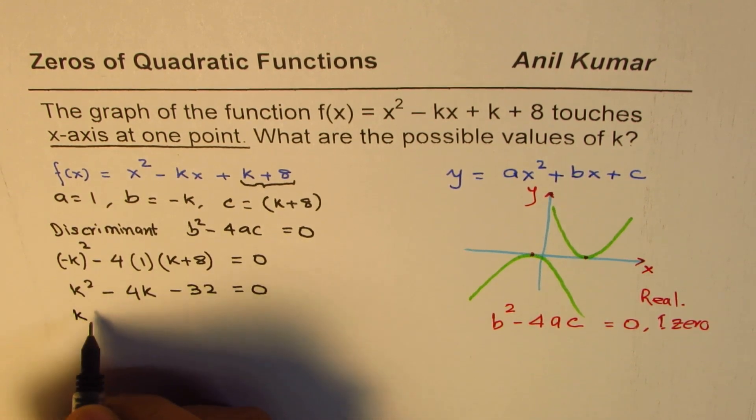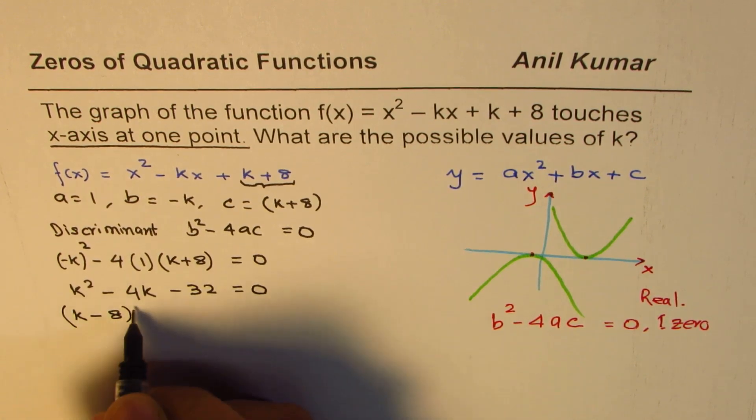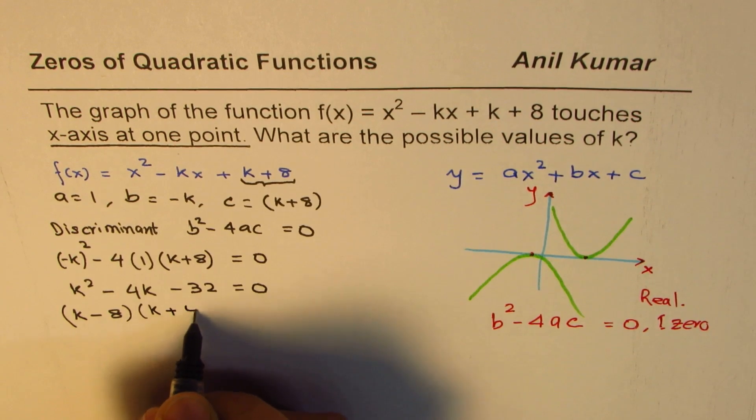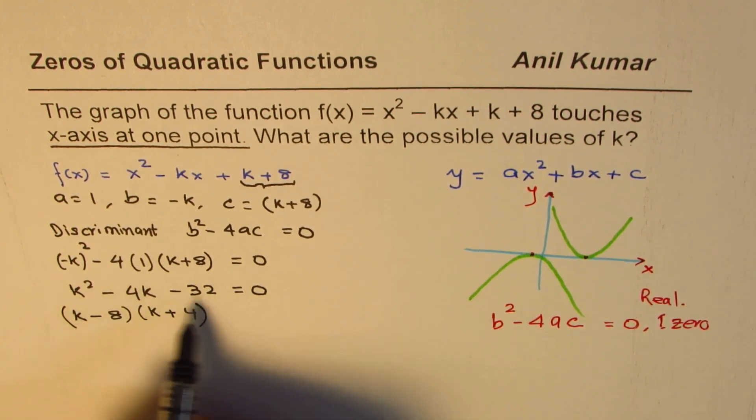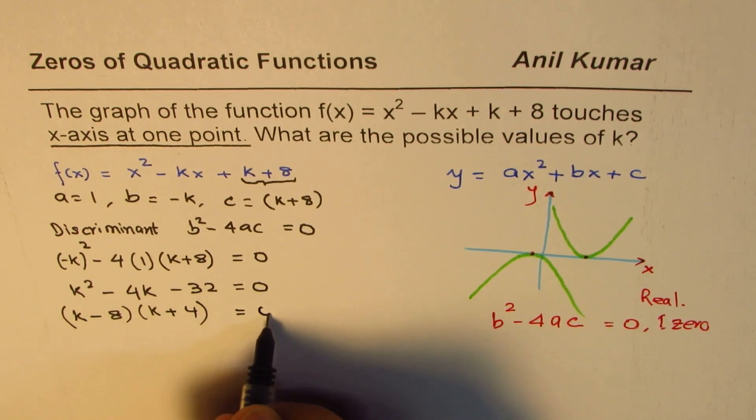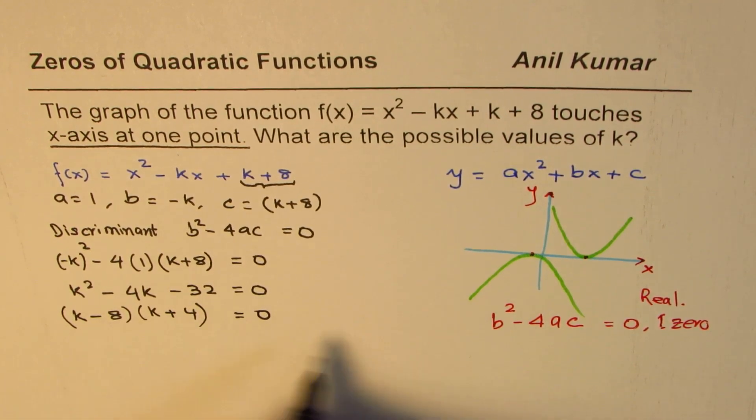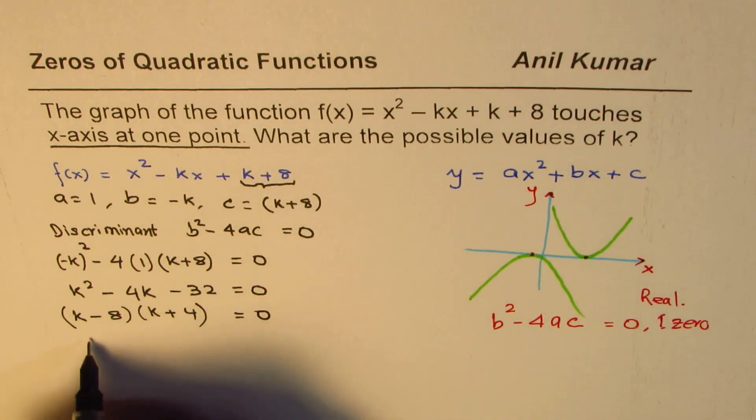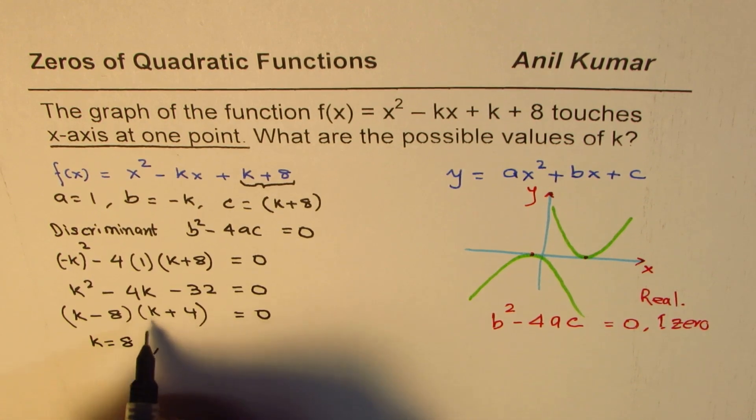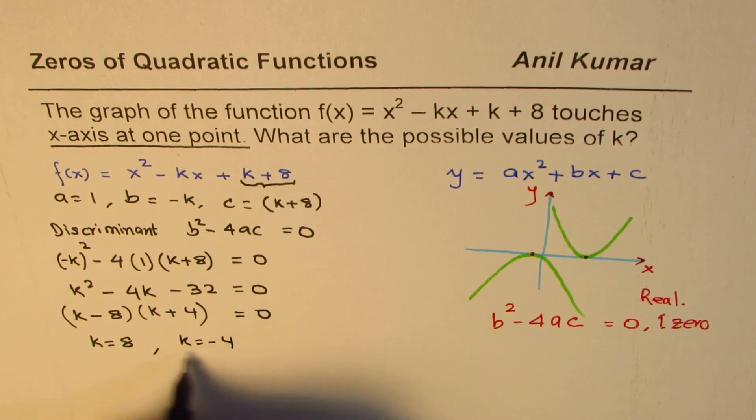Now 8 times 4 is 32. So I could factor this as k, bigger number is negative, k minus 8, times k plus 4. So that will give you the factored form of this equation, equals to 0. So we find two solutions for this condition. So the constant k could be equal to 8, or it could be equal to minus 4.